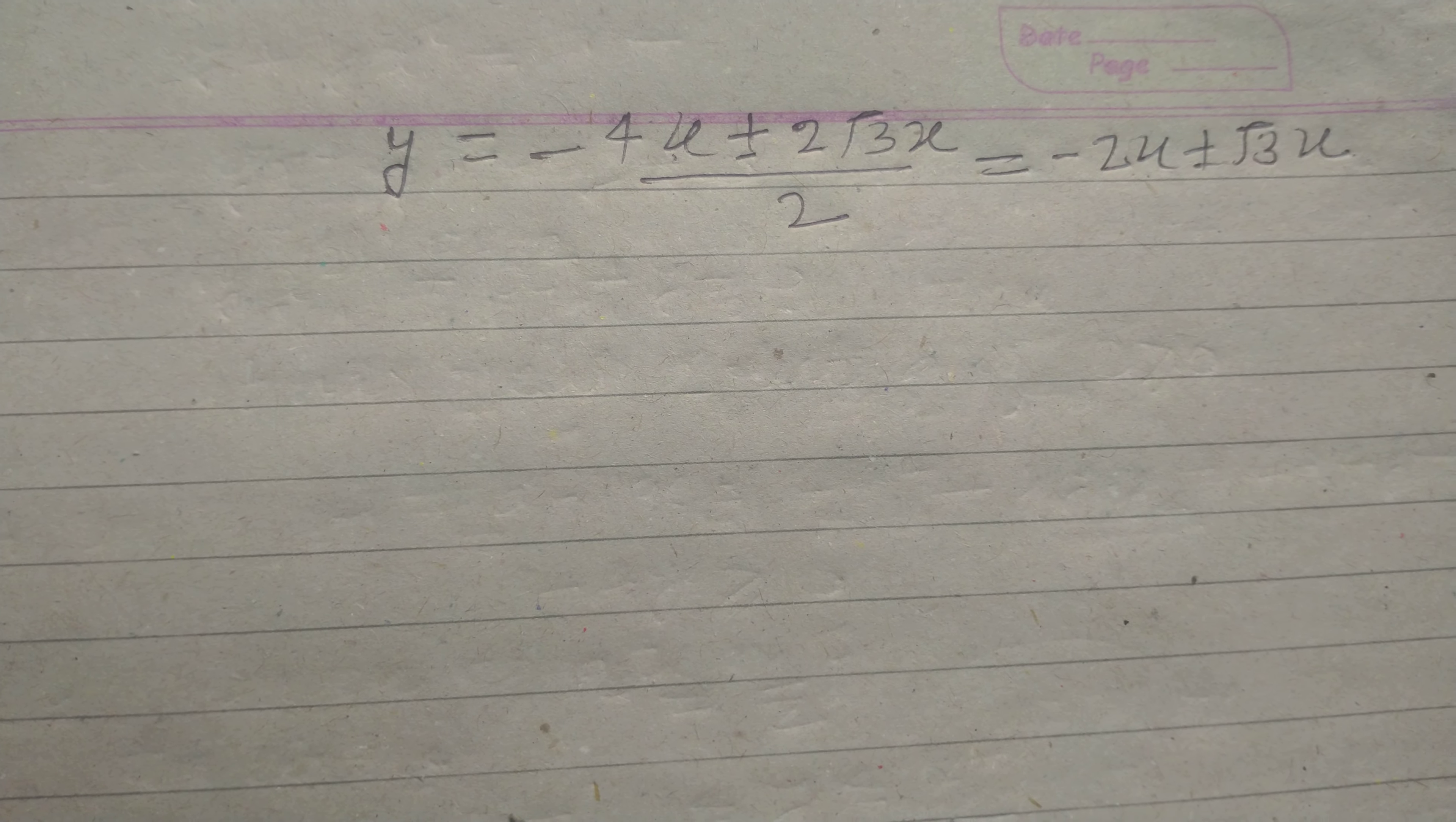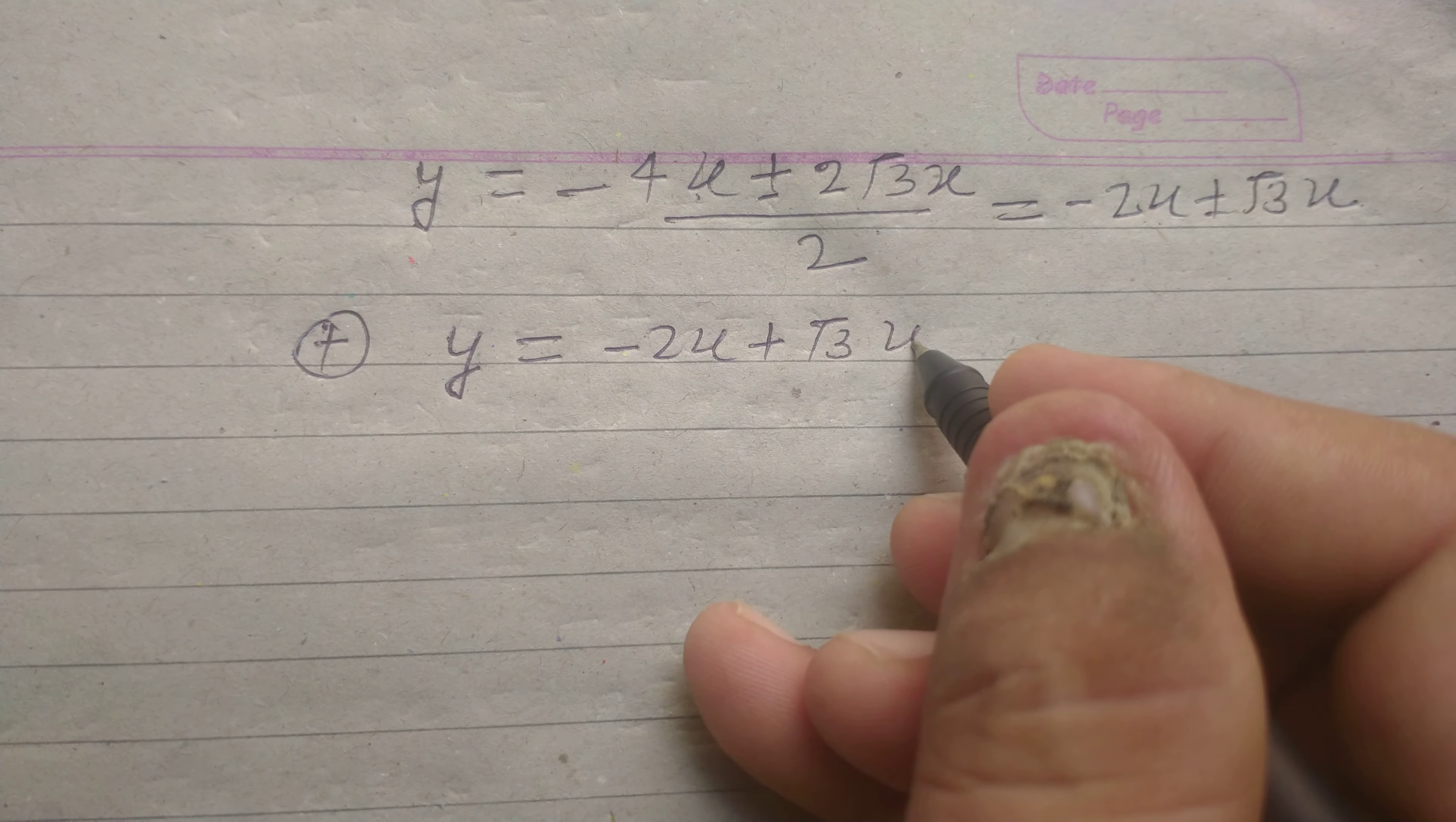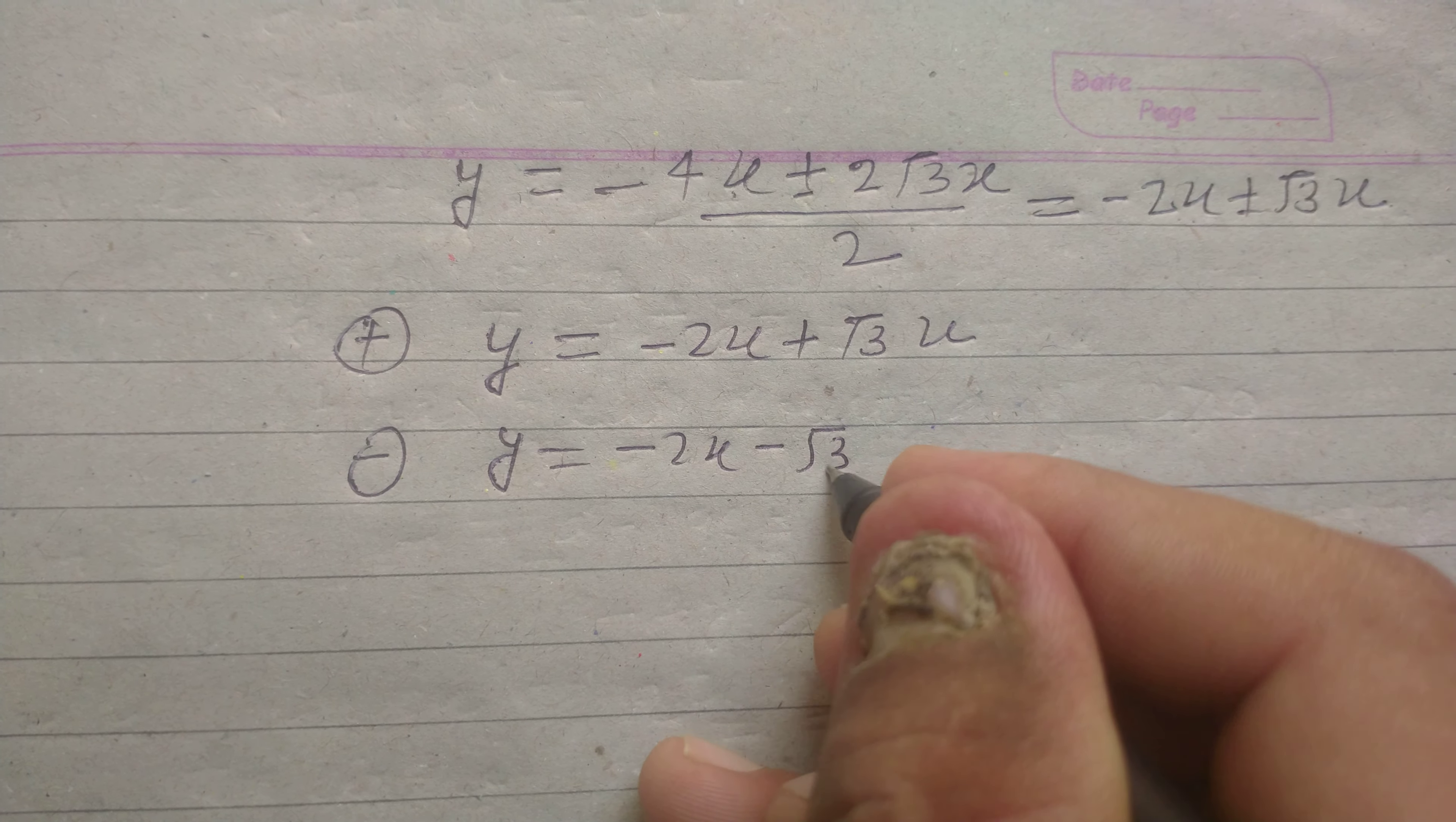By taking positive sign, we have y = -2x + √3x. From here, we can get the first equation of the line. And on taking minus, y = -2x - √3x.